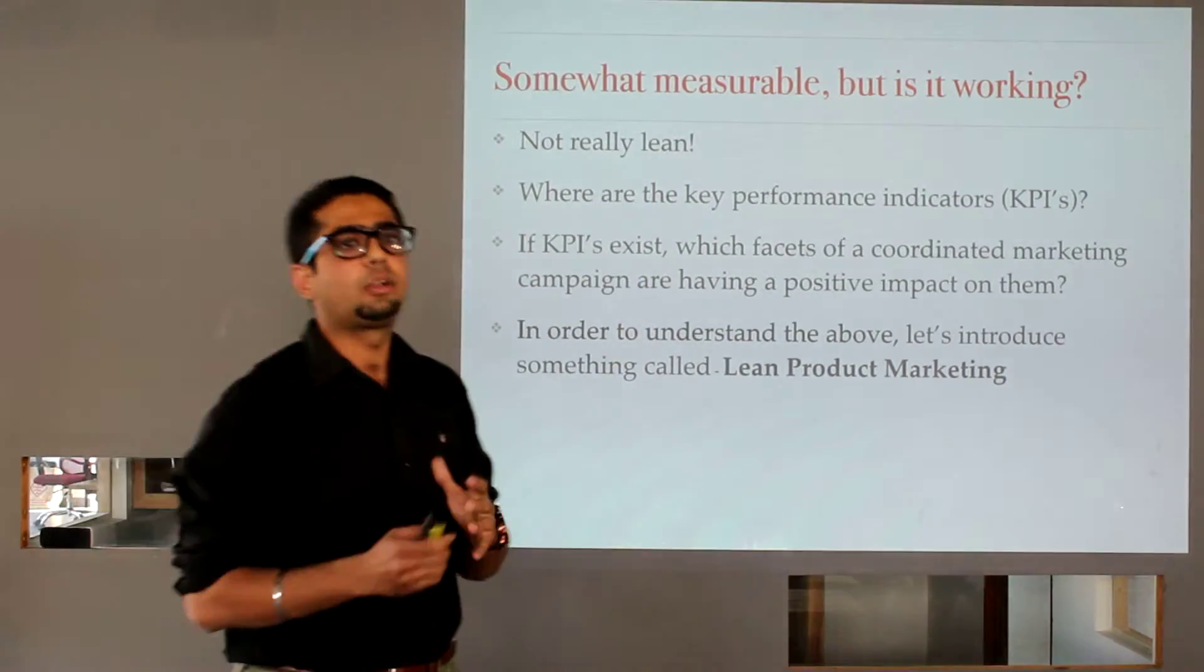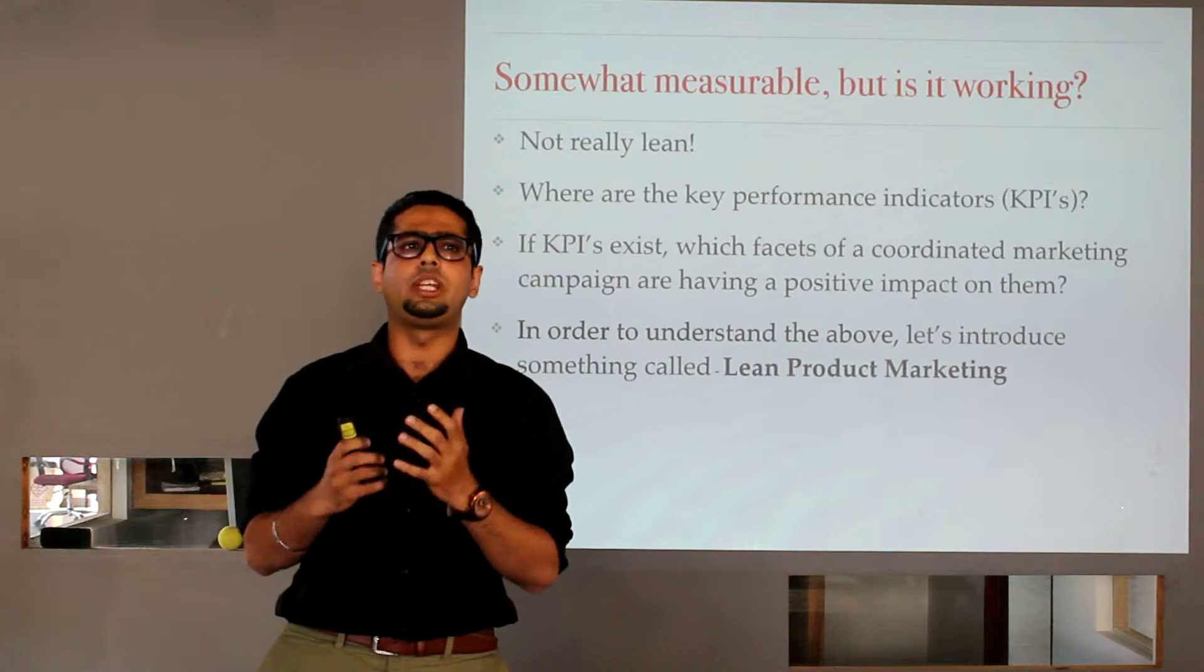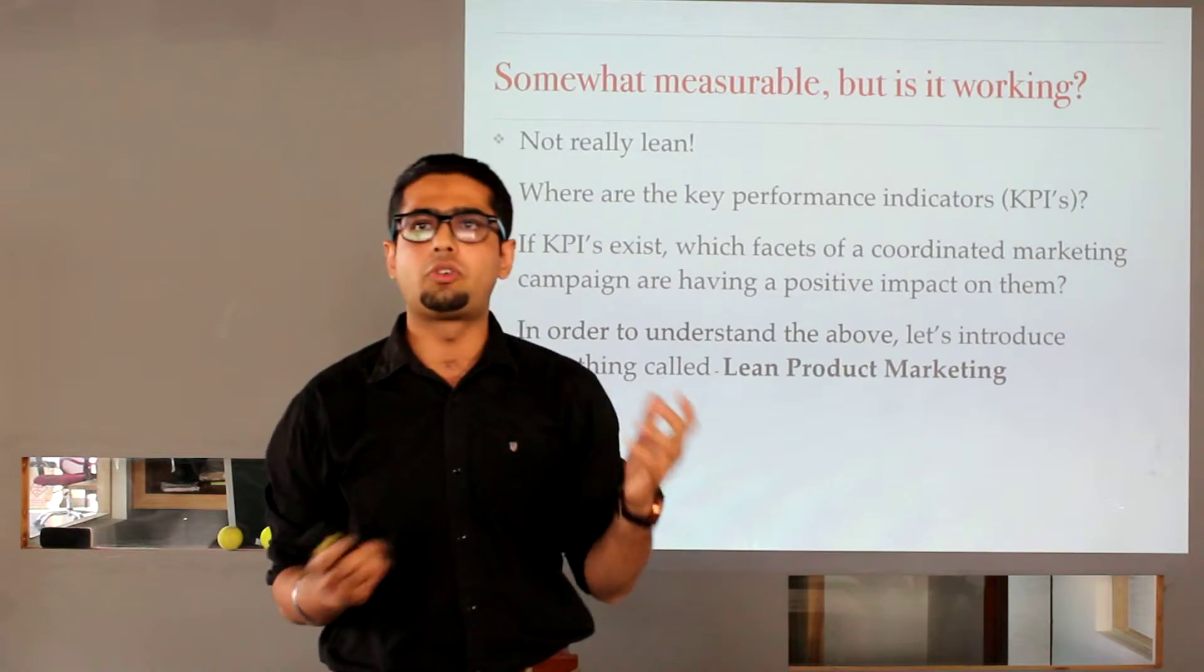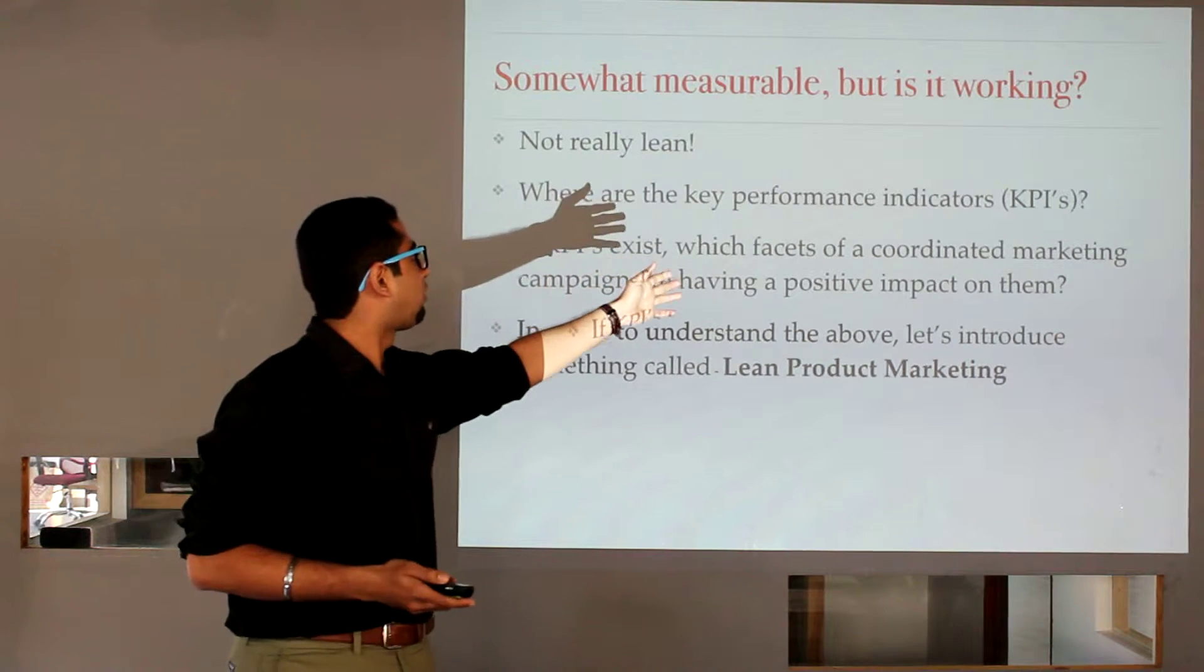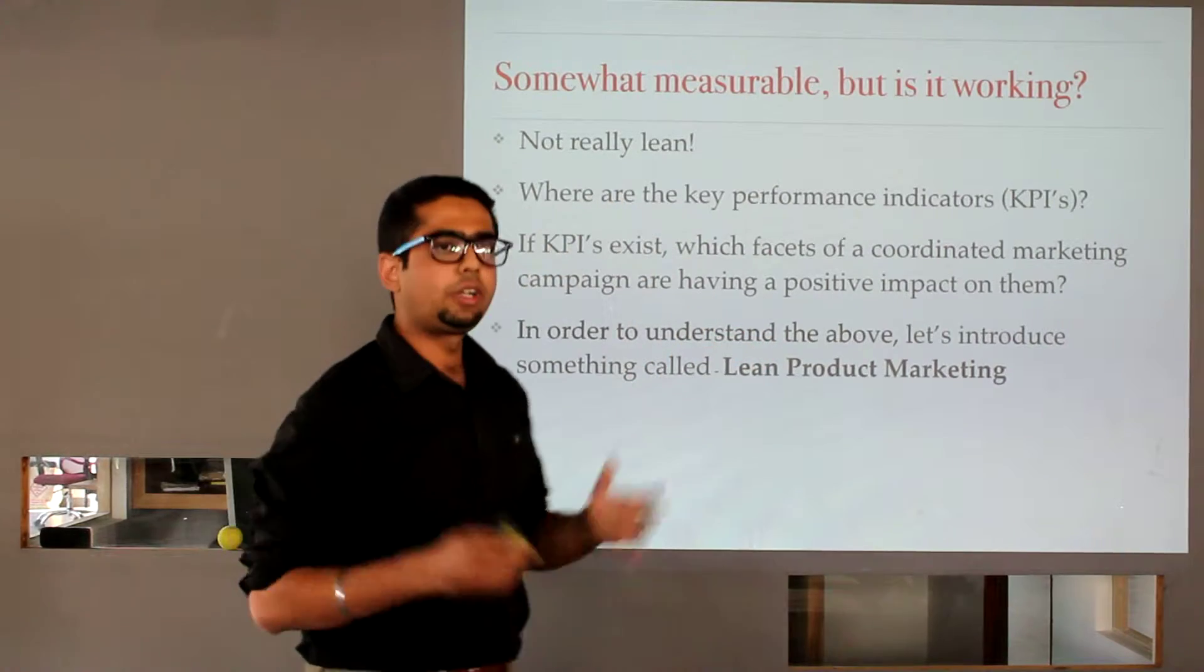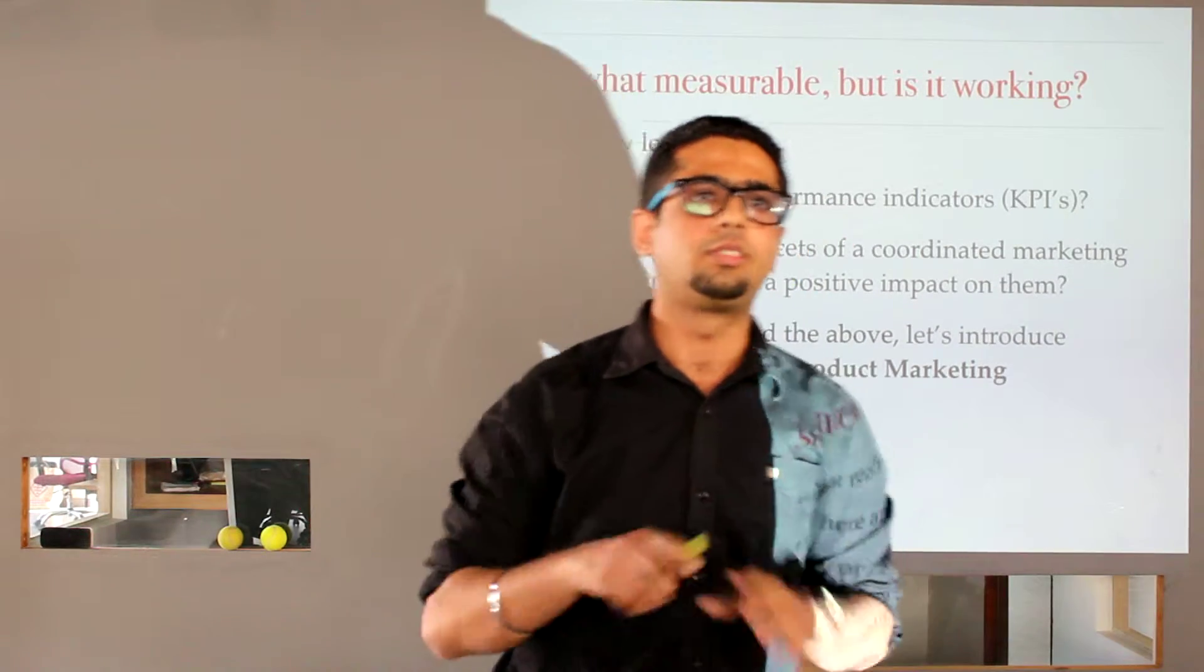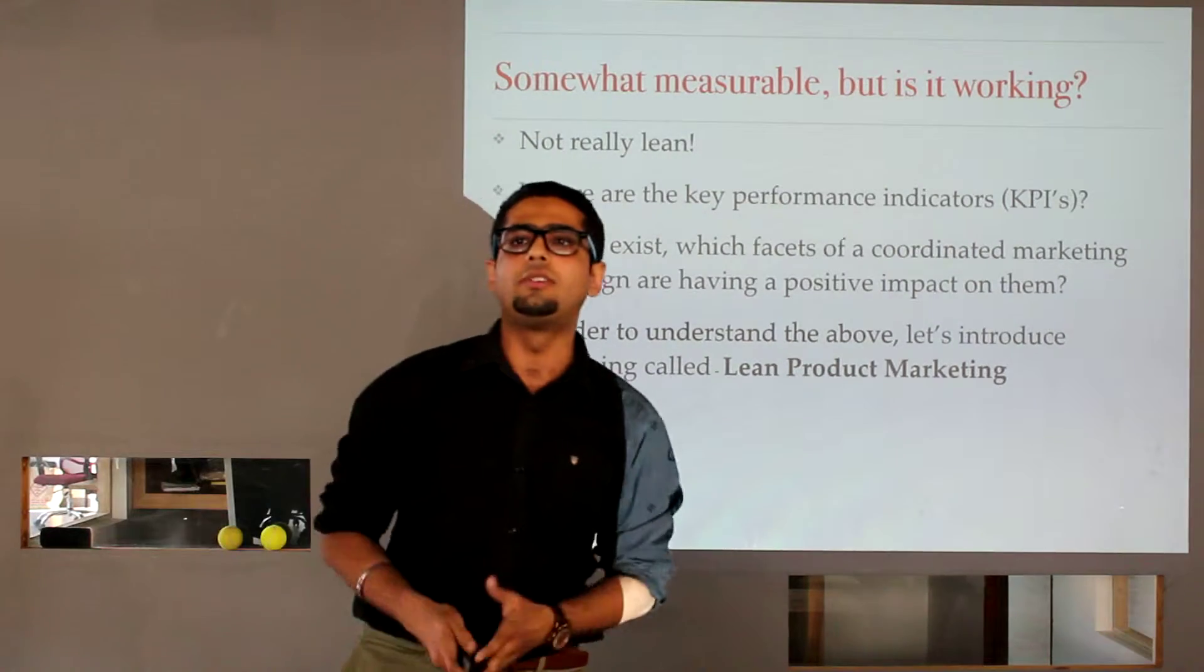So, the problems that I found here were that it's not really lean. It's not really adaptive to the market. Where are the key performance indicators? Now, we had metrics. But we didn't essentially have key performance indicators. If KPIs did exist, which facets of a coordinated marketing campaign are having a positive impact on them? To put it in simple words, I had metrics. But I did not have KPIs to point out, this works, this doesn't work. In order to understand all of this, let's introduce a concept called Lean Product Marketing.